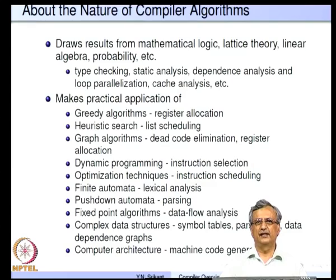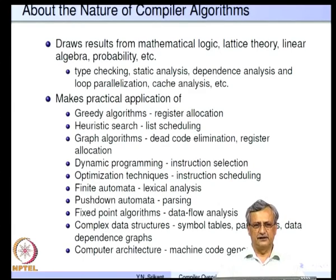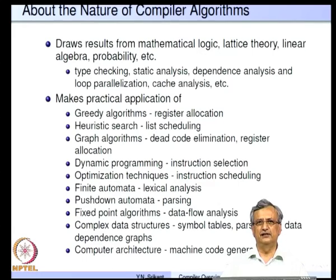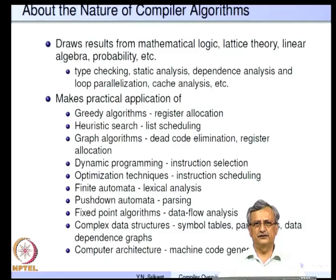Let us look at the types of algorithms used inside a compiler. We require results from mathematical logic, lattice theory, linear algebra, and probability, among others. Mathematical logic is used in developing type-checking theory; lattice theory is used in developing static analysis; dependence analysis is heavily based on linear algebra; loop parallelization is based on loop dependence analysis; and cache analysis uses both static analysis and probability theory. A very deep mathematical background is required to develop new compiler algorithms.